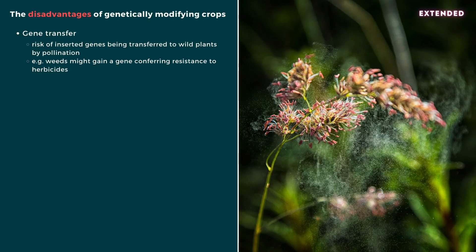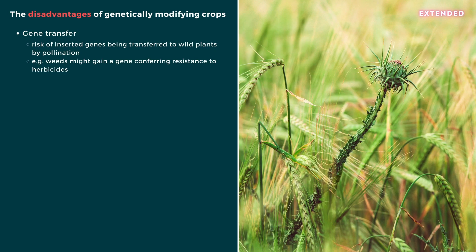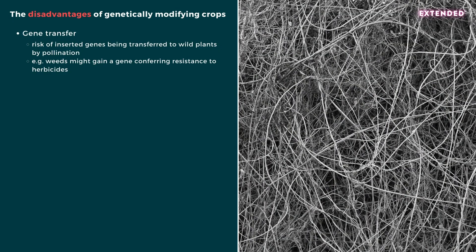Now onto some disadvantages. There is a risk of inserted genes being transferred to wild plants by pollination. For example, if weeds were to gain a gene conferring resistance to herbicides, it would render the herbicides ineffective. If a plant were to gain resistance to a disease or insect pests, it might begin to dominate other wild species, upsetting the delicate balance of the ecosystem.